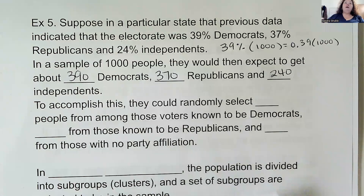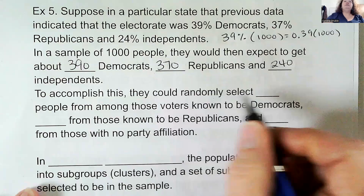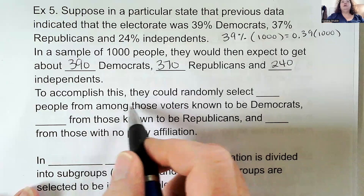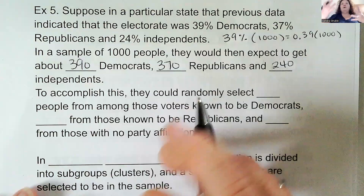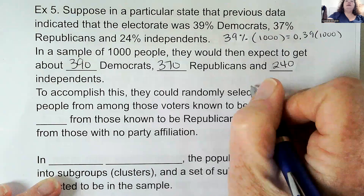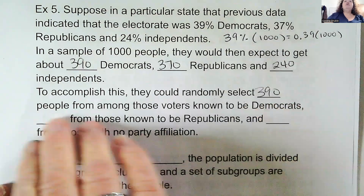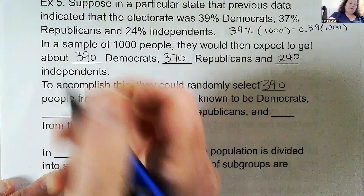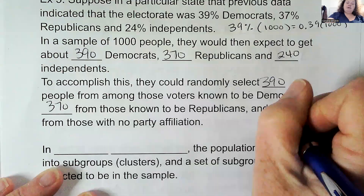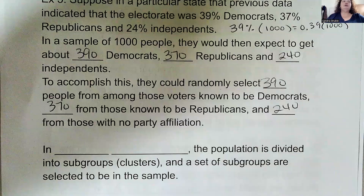To accomplish this, they could randomly select 390 people from among those voters known to be Democrats, 370 from those known to be Republicans, and 240 from those with no party affiliation.